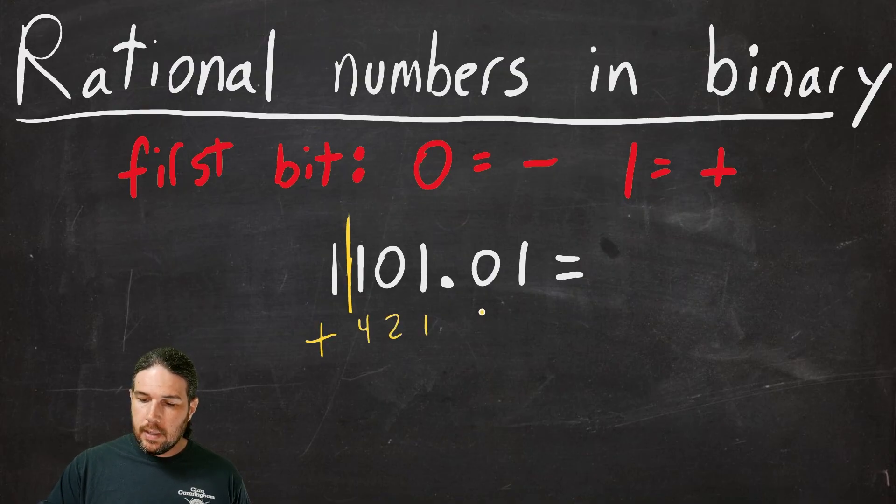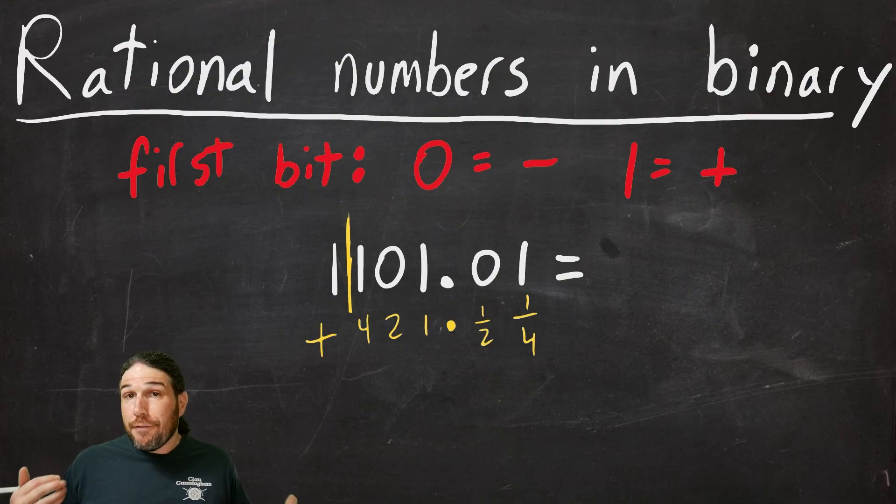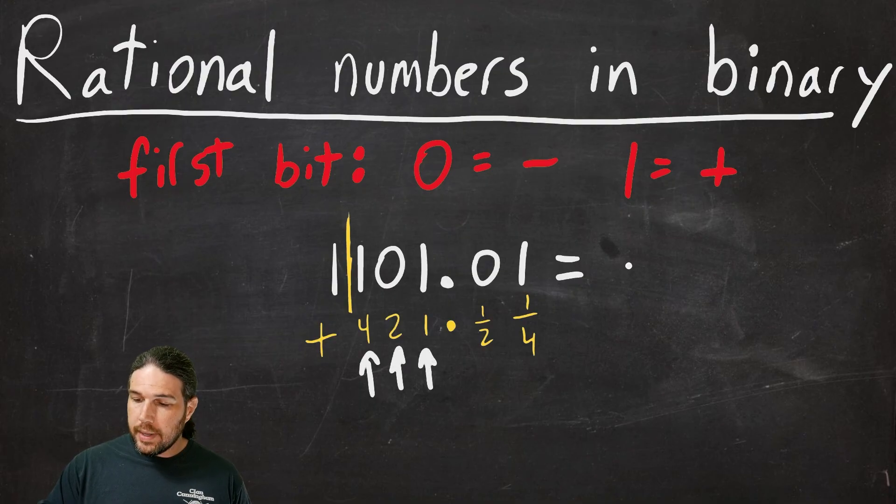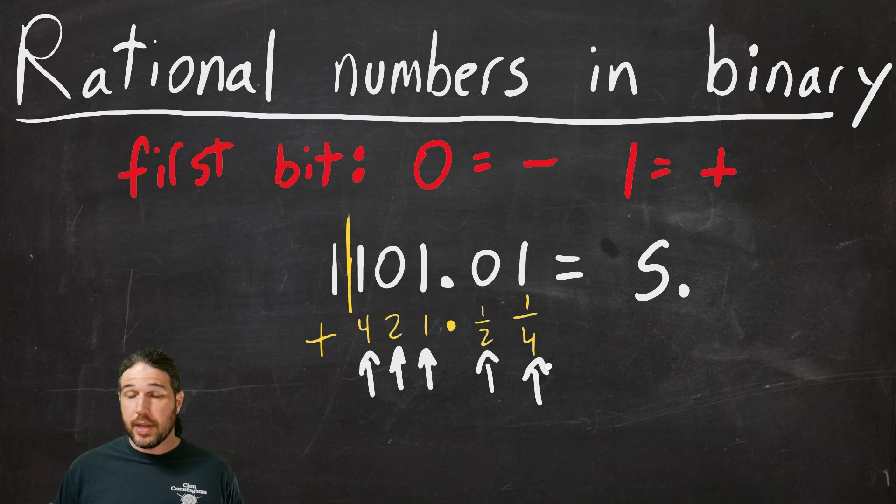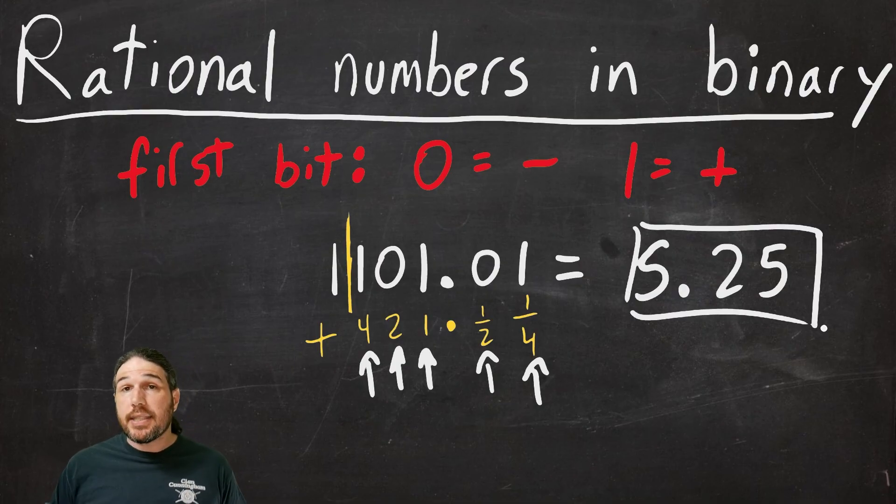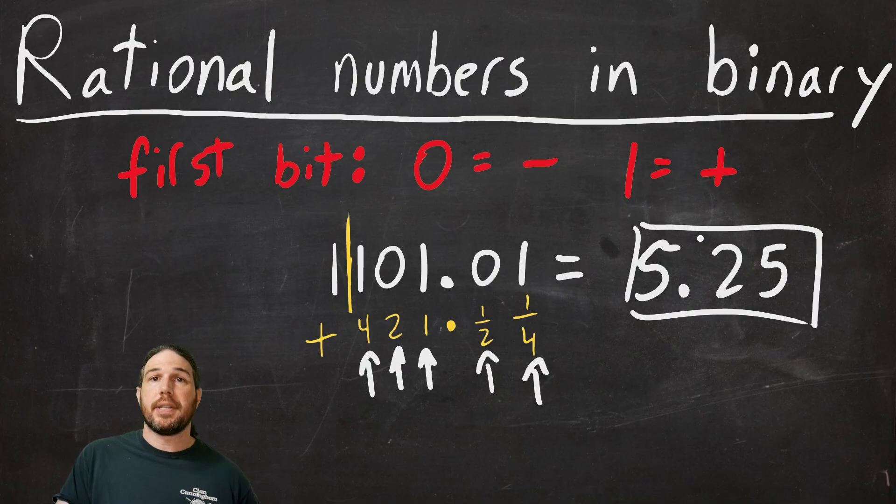So our final answer is four plus zero plus one is five. There is no one half, but there is a one fourth, which is 0.25. So the answer is 5.25. And again, it is positive 5.25 because the very first bit is a one, which in this particular problem means that the number that follows is positive. Again, I cannot overstate this. You have to know what the rules are for the problem you are working on before you are able to get a correct answer.